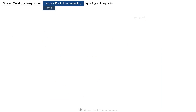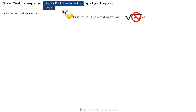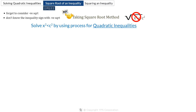If you are given x squared less than c squared and asked to find the possible values of x, you may be tempted to take the square root of the inequality — but do not do it. Solving by taking square roots is prone to errors; students often forget the negative square root or get confused about the inequality sign. A far better way is to follow the quadratic inequality process, because x squared less than c squared is a quadratic inequality. So we follow the same four steps as before.